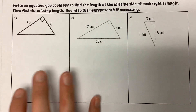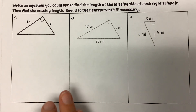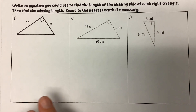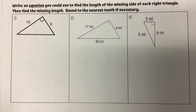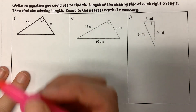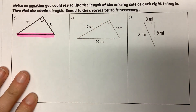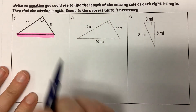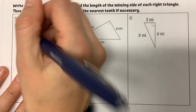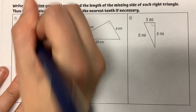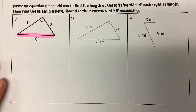Next up, you can write an equation you could use to find the length of the missing side of each right triangle, then find the missing length, round to the nearest tenth if necessary. I want you showing your work. First here, I'm just going to highlight the side that is missing. Since it's a side that's not at the 90-degree angle, that means this is our hypotenuse C.